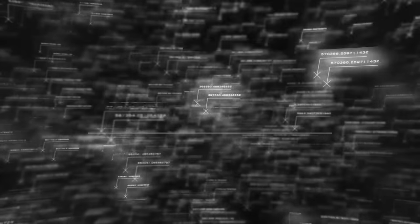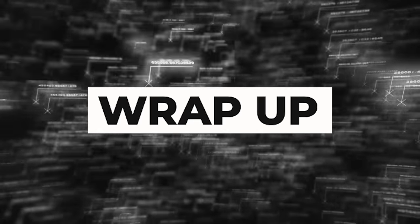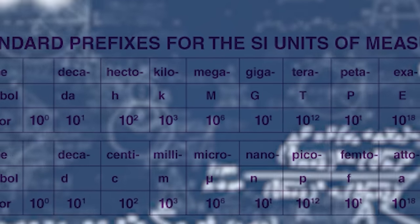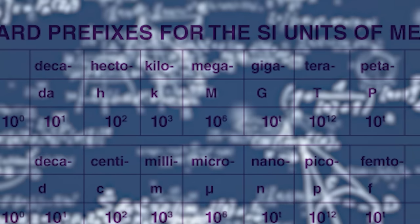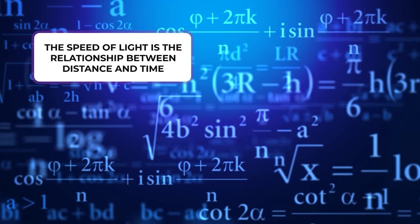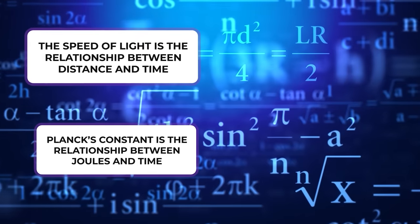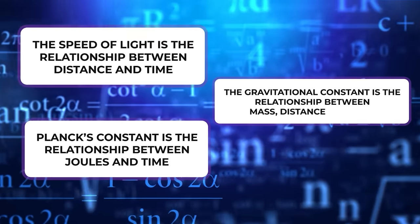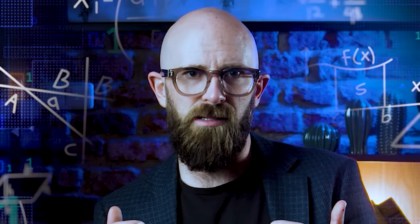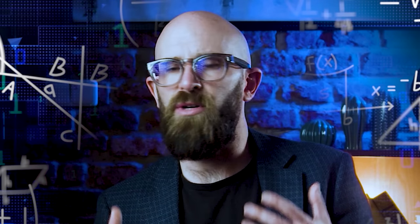So units of measurement are an important part of most constants because they give us a frame of reference for the relationship represented by that constant. The speed of light is the relationship between distance and time. Planck's constant is the relationship between joules and time, and the gravitational constant is the relationship between mass, distance, and time. So if the fine structure constant is dimensionless, what is the relationship that this number is meant to represent?